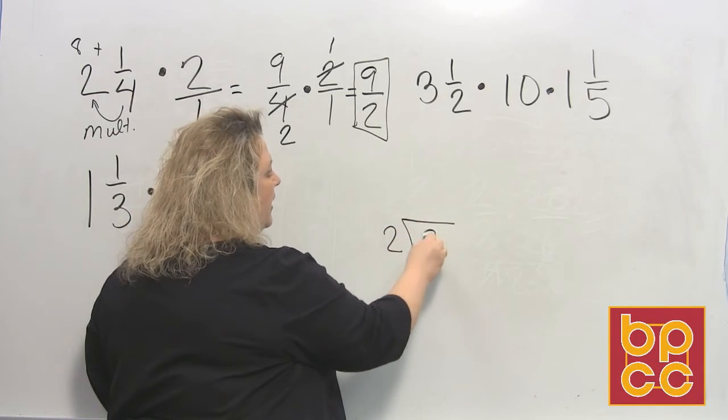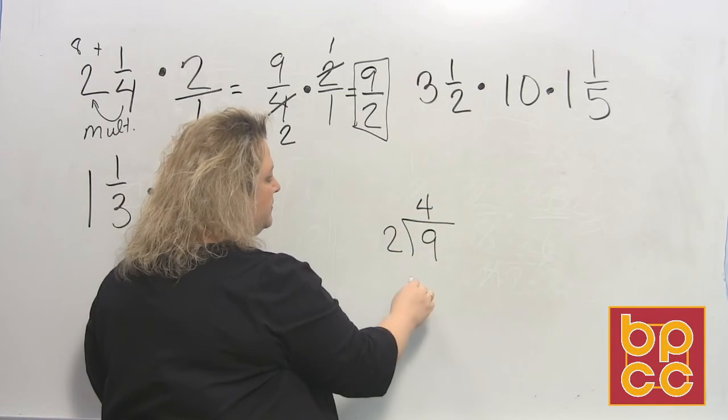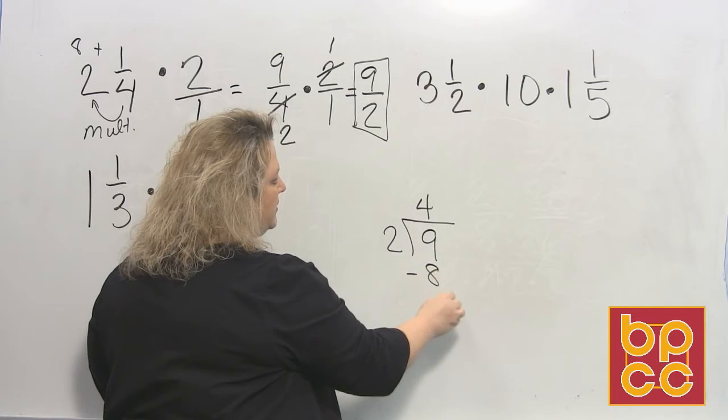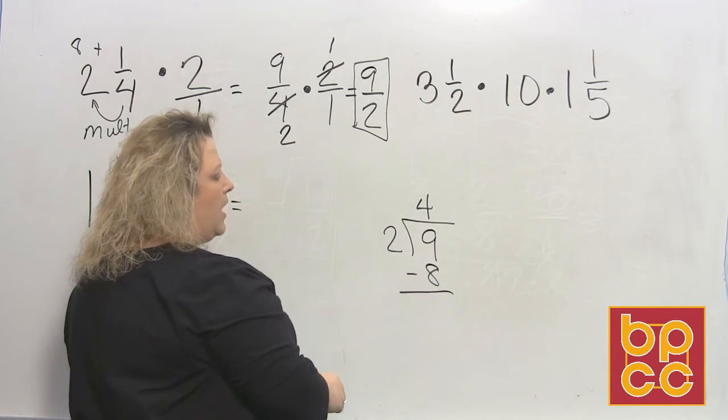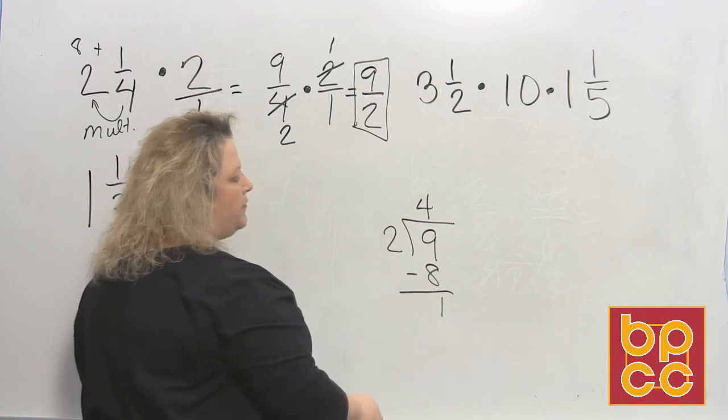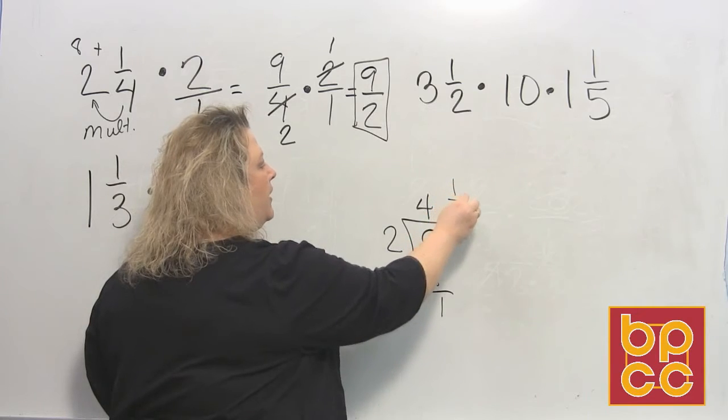2 divides into 9 four times, which makes 8. And then when you subtract, that leaves you 1 left over. So that's 4 and 1/2.